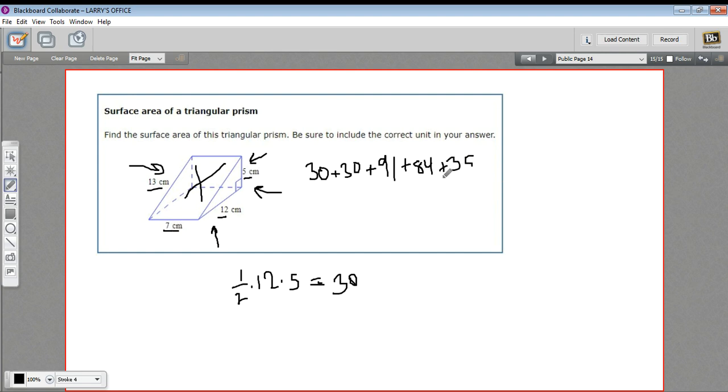Now, all we need to do is add all of those together. 60 plus 91, plus 84, plus 35. And it looks like this is 270. And the units are centimeters. This is area, so it's square centimeters.